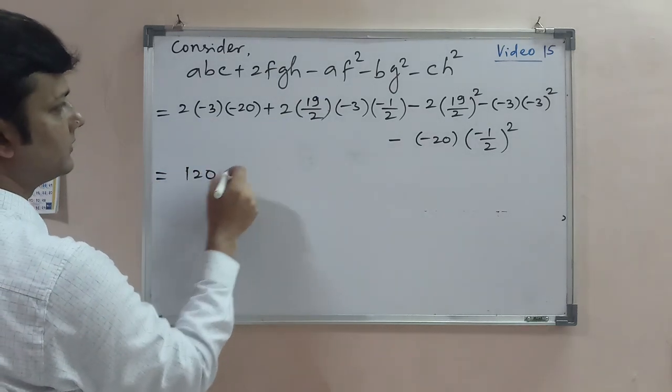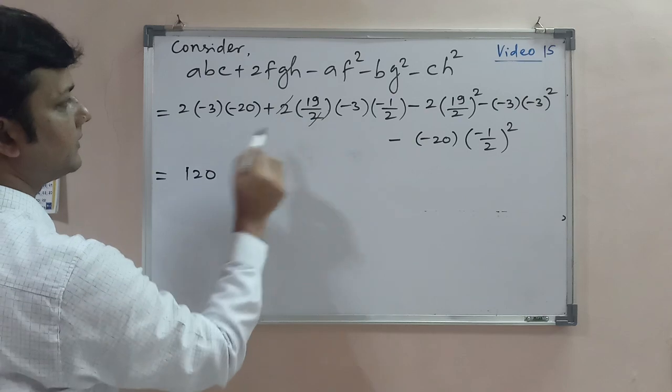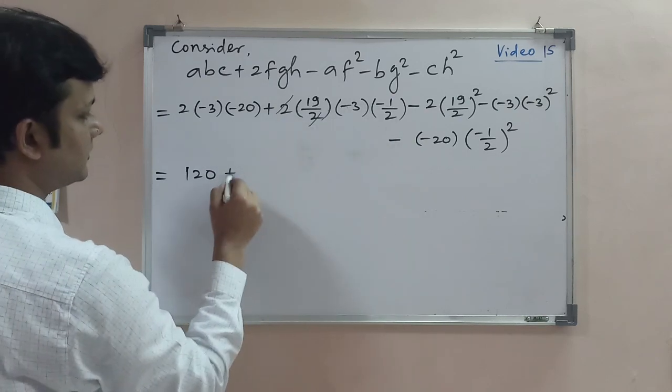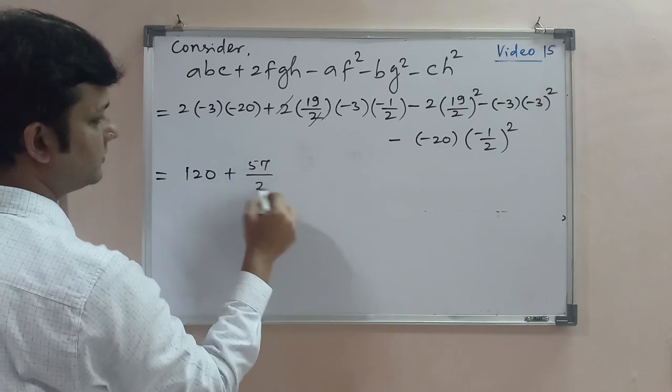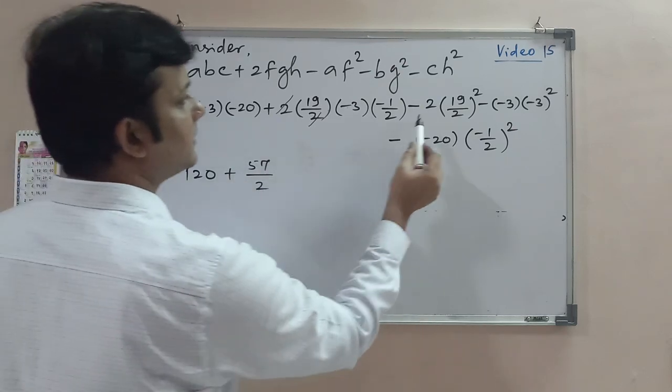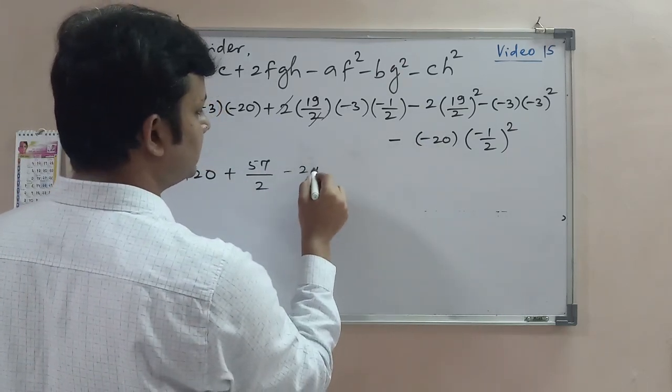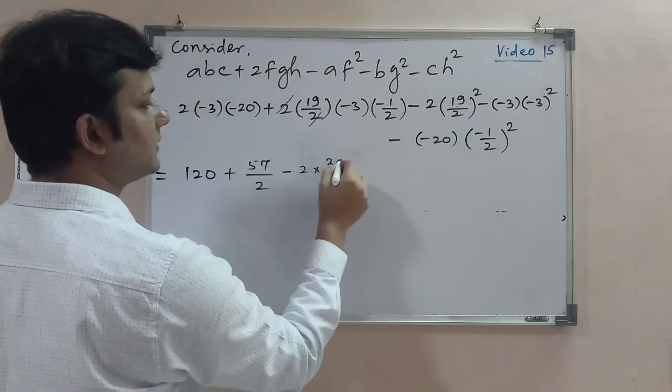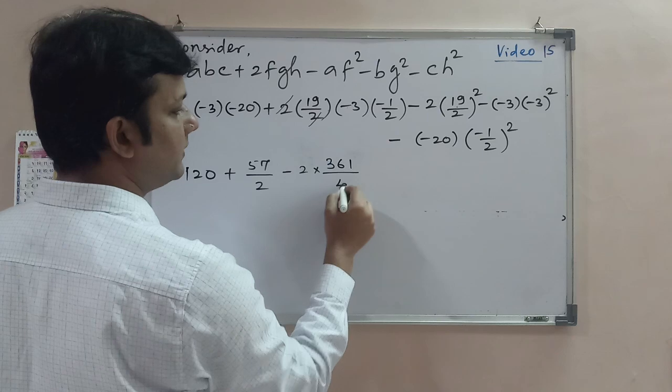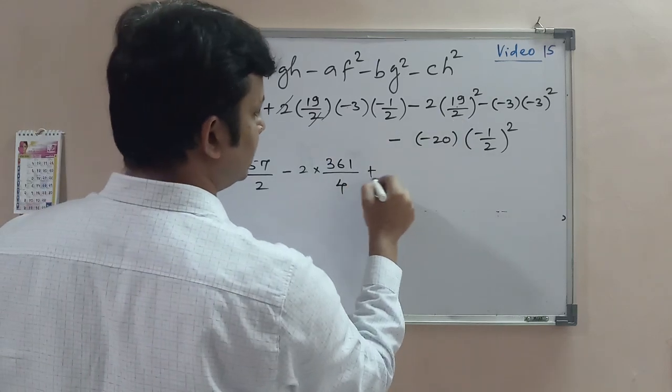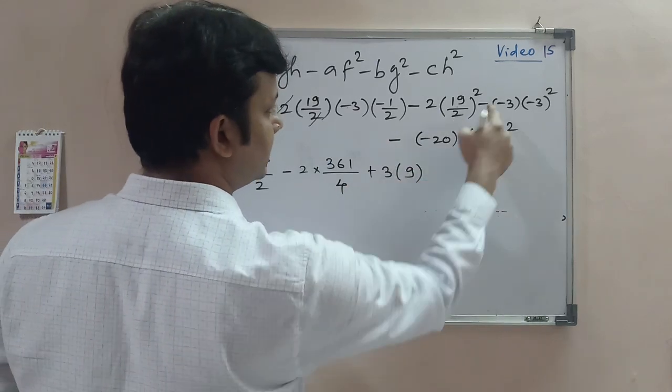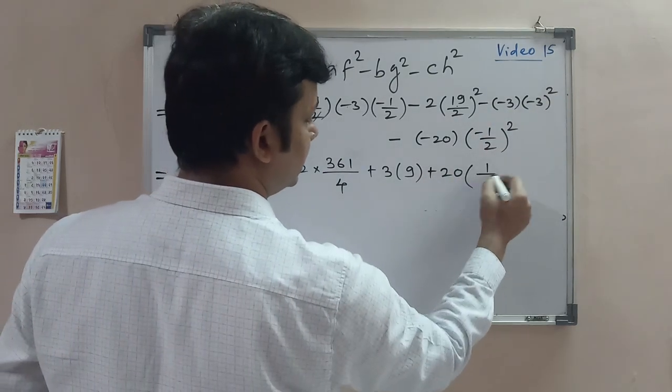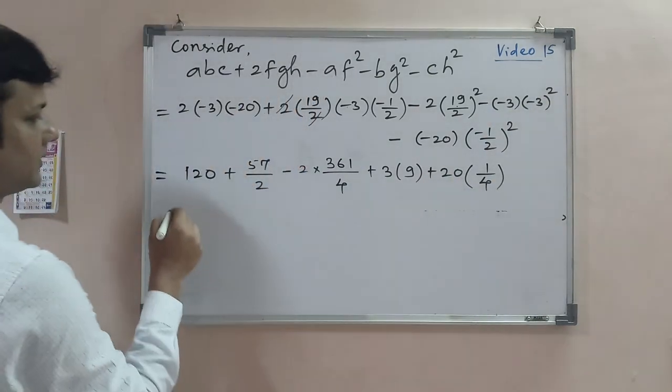Calculating: 2 times (19/2) times (-3) times (-1/2), then minus 2 times (19/2)² which is 361/4, plus 3 times 9, plus 20 times 1/4.